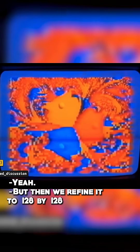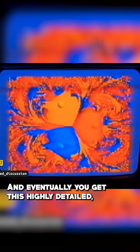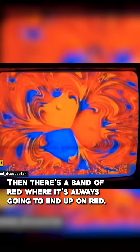But then we refine it to 128 by 128. And eventually, you get this highly detailed - you see bands where it's like here it's blue, then there's a band of red where it's always going to end up on red, then there's a band of yellow.